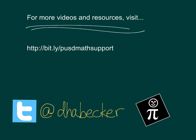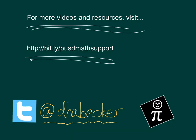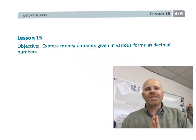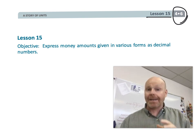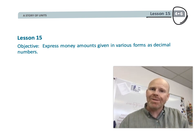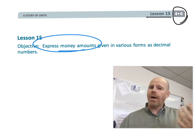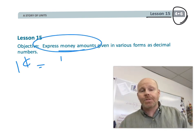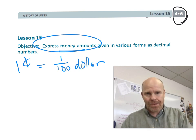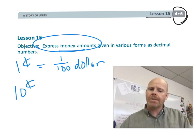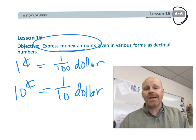This is fourth grade module 6 lesson 15. In this lesson students are going to be adding decimals in the context of money, connecting pennies to a hundredth of a dollar and dimes to a tenth of a dollar. We're still not quite at the standard algorithm, because at this point we're still laying those stepping stones towards developing a deep understanding of the mathematics.